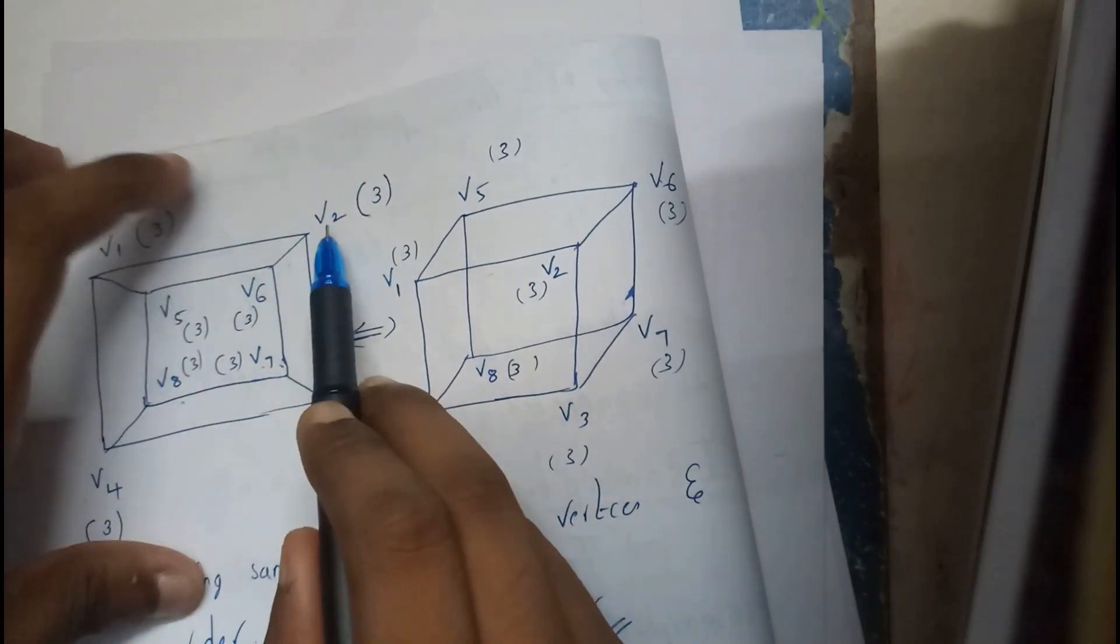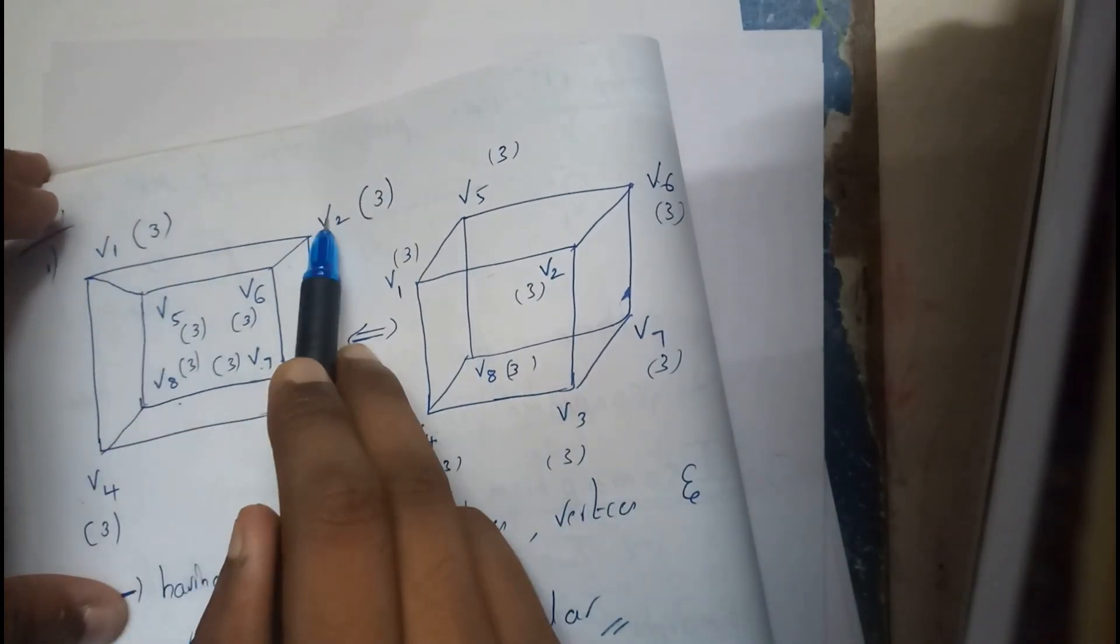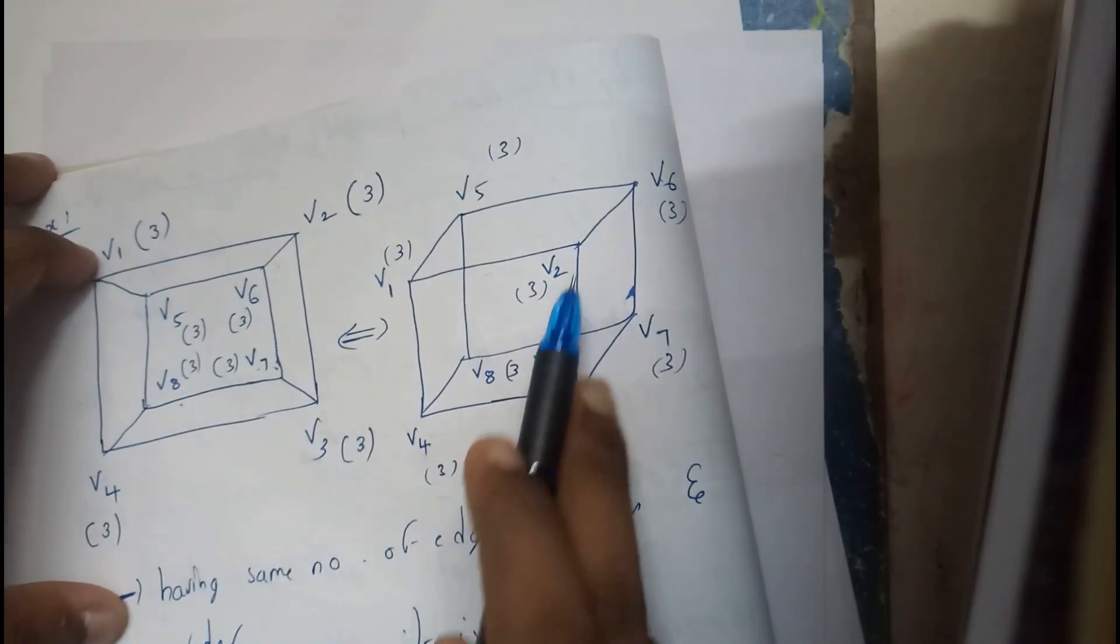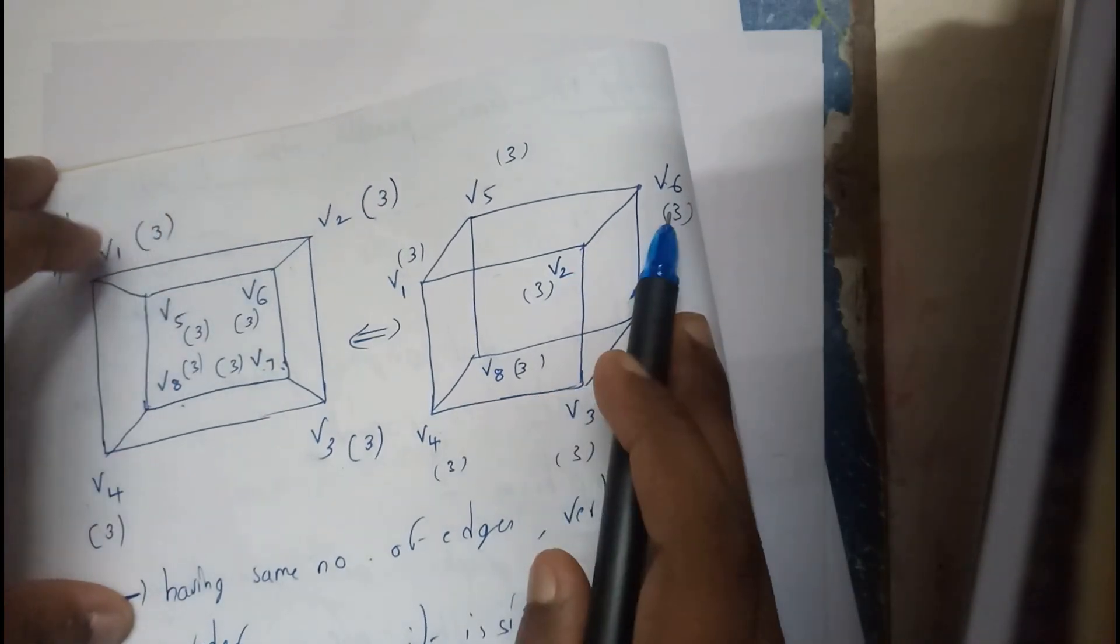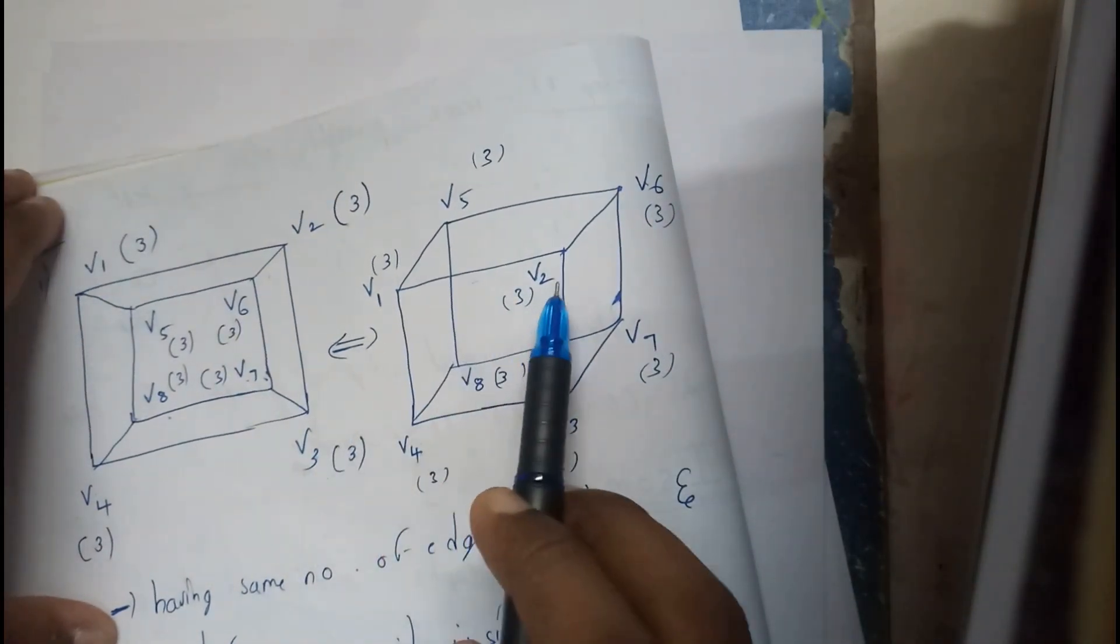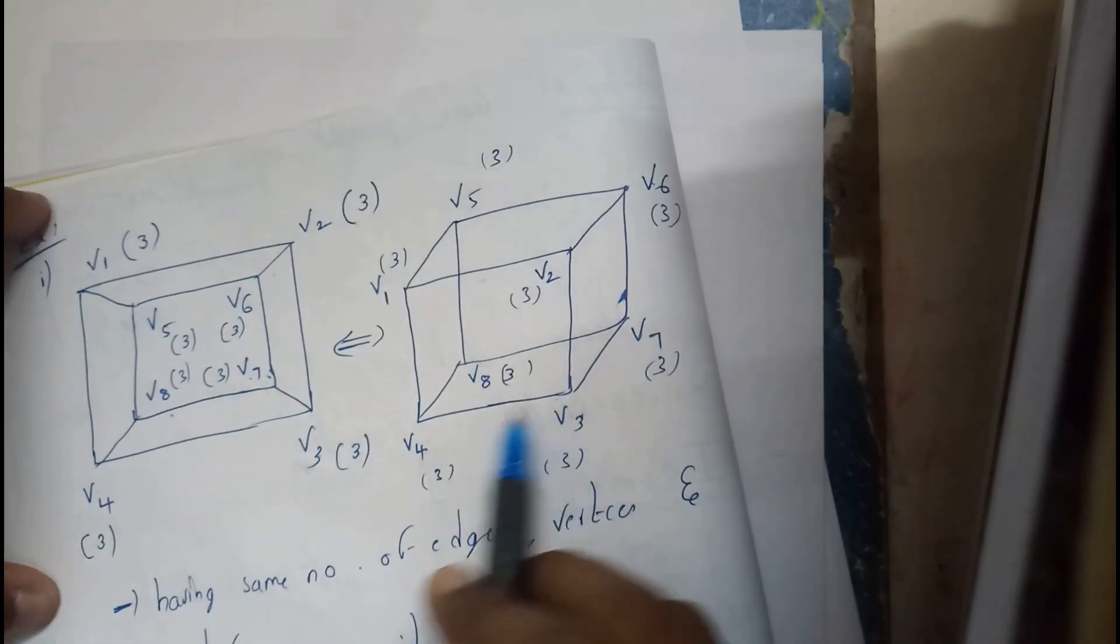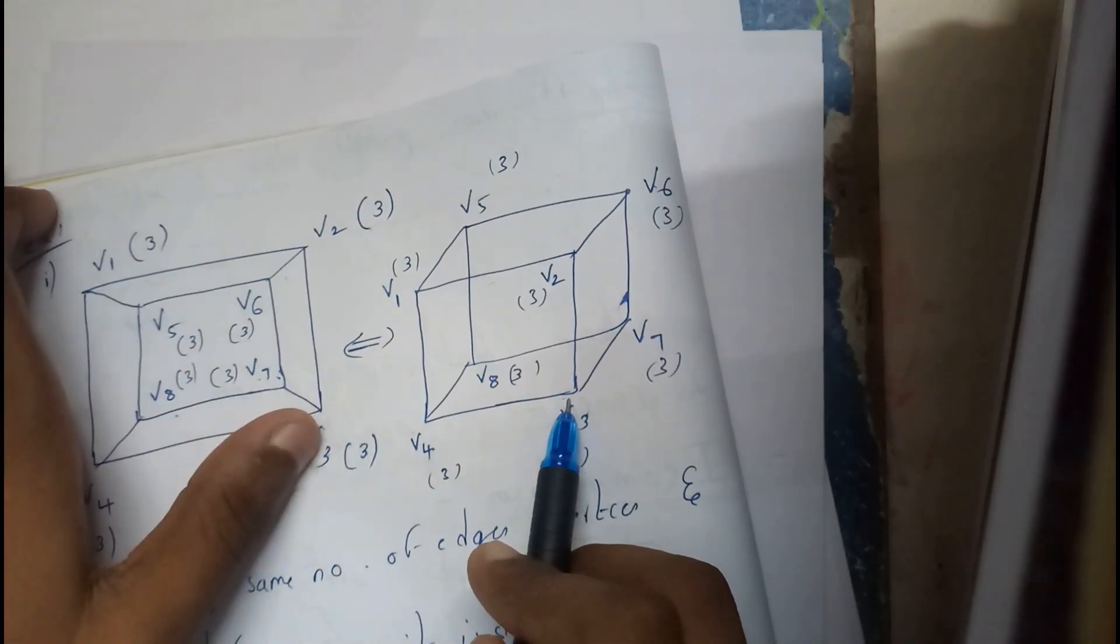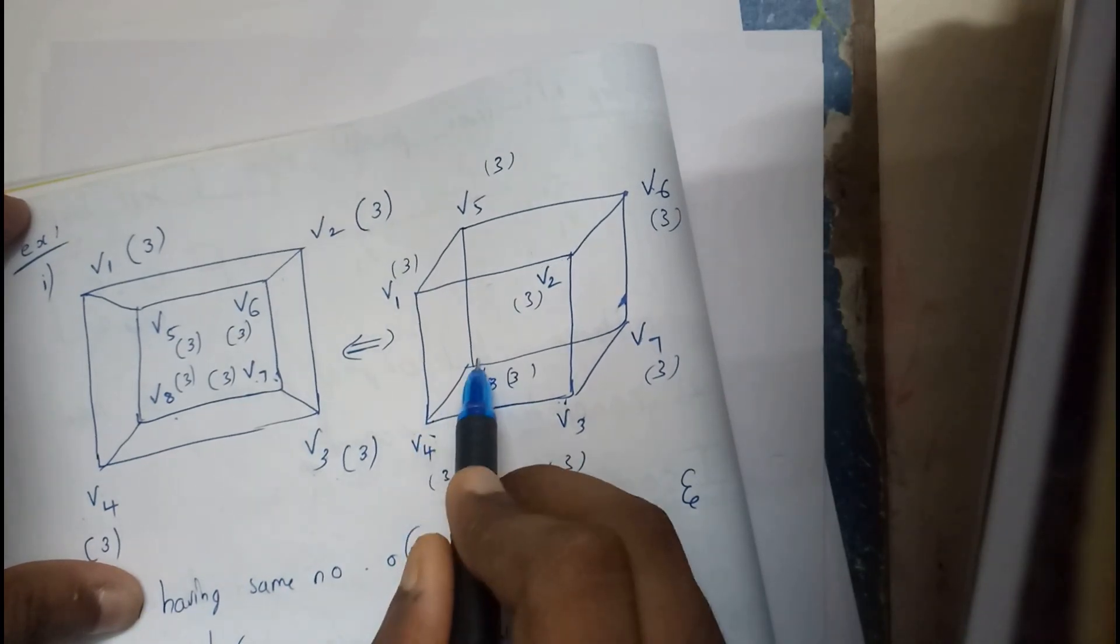If you want you can check step by step. v1 is done. v2 to v1, v2 to v1. v2 to v3, v2 to v3. v2 to v6, v2 to v6. Yes. Next v3 to v7, v3 to v4, v3 to v2, yep.